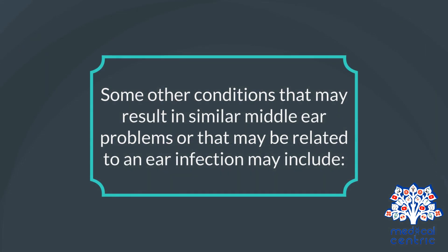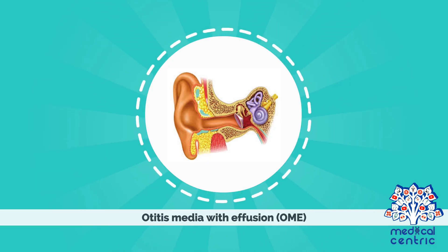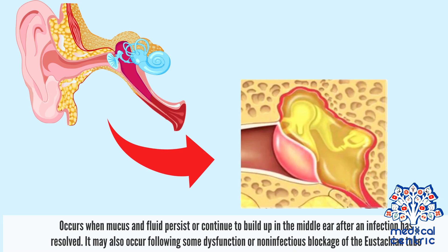Some other conditions that may result in similar middle ear problems, or that may be related to an ear infection, may include otitis media with effusion, or OME, which occurs when mucus and fluid persist or continue to build up in the middle ear after an infection has resolved. It may also occur following some dysfunction or non-infectious blockage of the Eustachian tube.